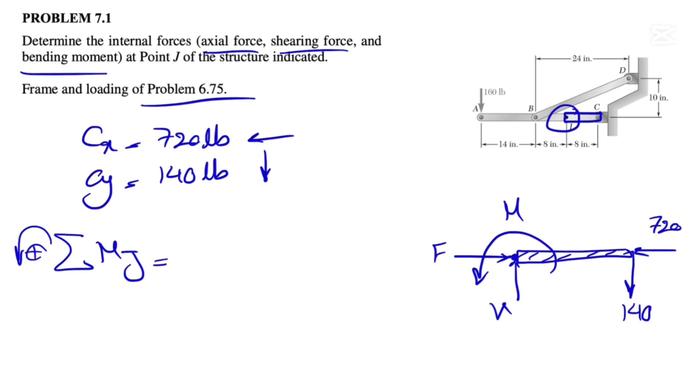That way we can get rid of F and V. So we're going to have the moment of the 140 pounds force, which we can see the moment is in clockwise direction. So we have minus 140 times the length here, which is eight inches. So 140 times eight, and we consider a counter-clockwise moment M equals zero.